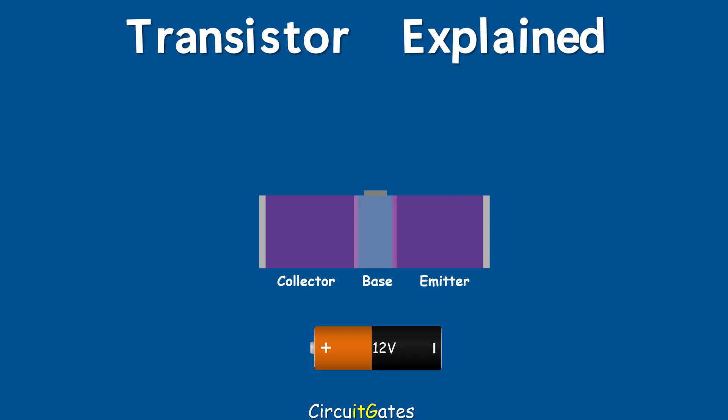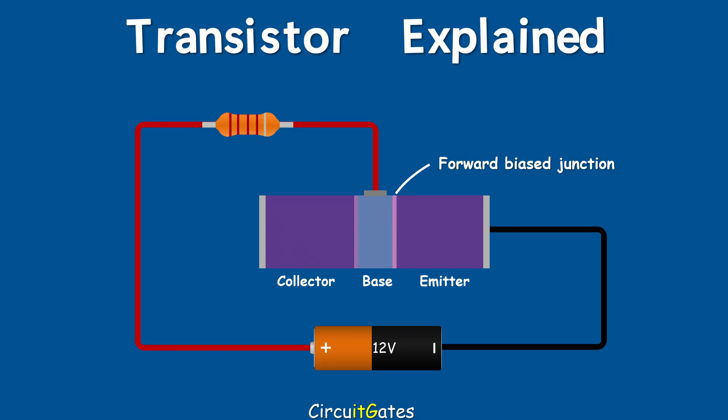For an NPN transistor, to connect the base-emitter junction in forward bias, the negative side of the battery is connected to the emitter lead and the positive is connected to the base lead. To connect the base-collector junction in reverse bias, the negative side is connected to the base lead and the positive side to the collector lead. Since we are using a single battery, the base-collector junction can also be reverse biased by connecting the base and collector regions to the positive side of the battery while the emitter is connected to the negative side. The connections are reversed when connecting a PNP transistor.